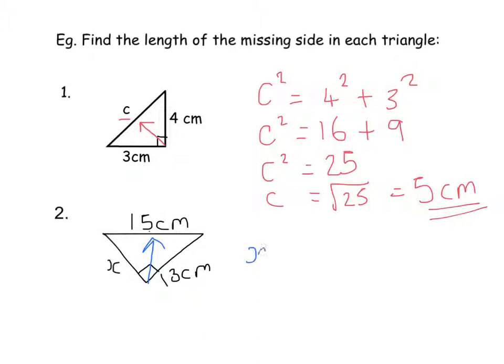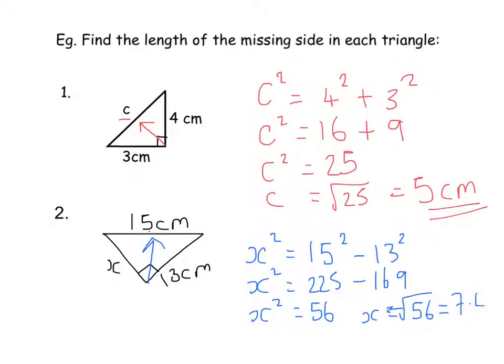So to write that down, we're working out x squared, and we're going to do 15 squared, put the biggest side first, take away 13 squared. So if we work that out, 15 squared is 225, and 13 squared is 169. And if we work that out, we get 56. So to get x, we're going to do the square root of 56. The square root of 56 is 7.48, and it just keeps going. So if I was going to round this to one decimal place, I'm just going to write 7.5, because the 8 means that the 4 gets rounded up to a 5. And again, that's going to be in centimeters.